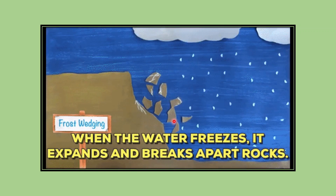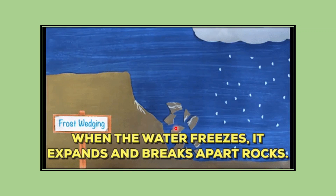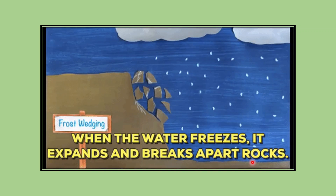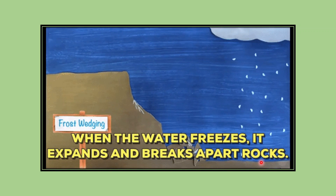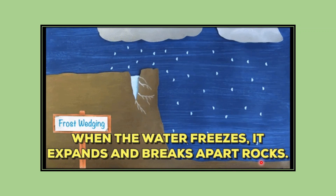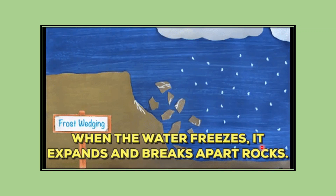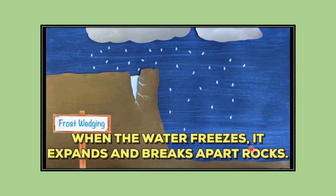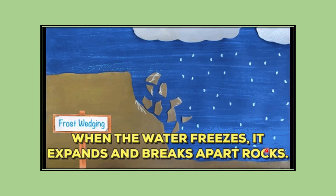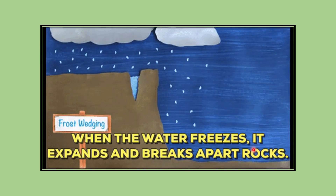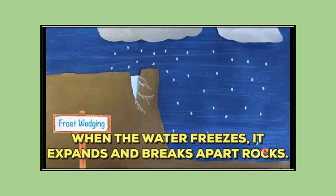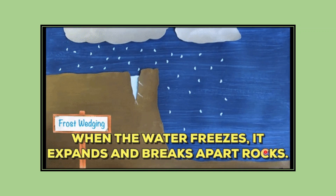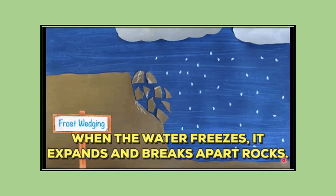Such breaking of rocks normally occurs in very cold countries and higher altitude regions. In countries with a temperate climate, frost action can be very useful for crop cultivation. During winter, the moisture in plowed soil freezes, and when it thaws — that is, melts — in spring, the soil is broken into fine grains, which makes farming very easy.